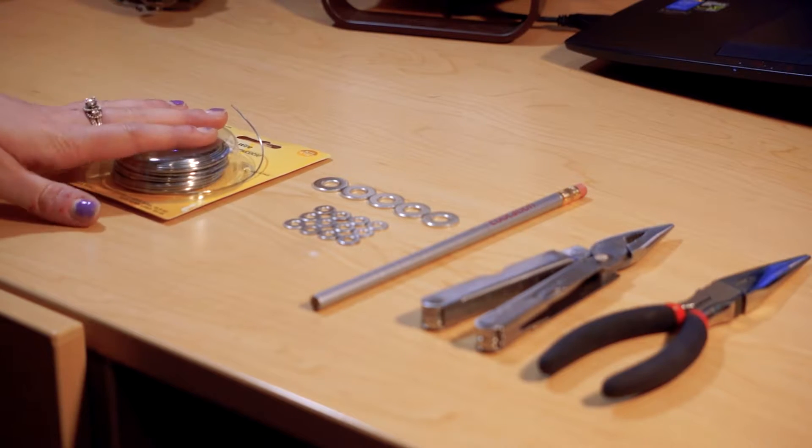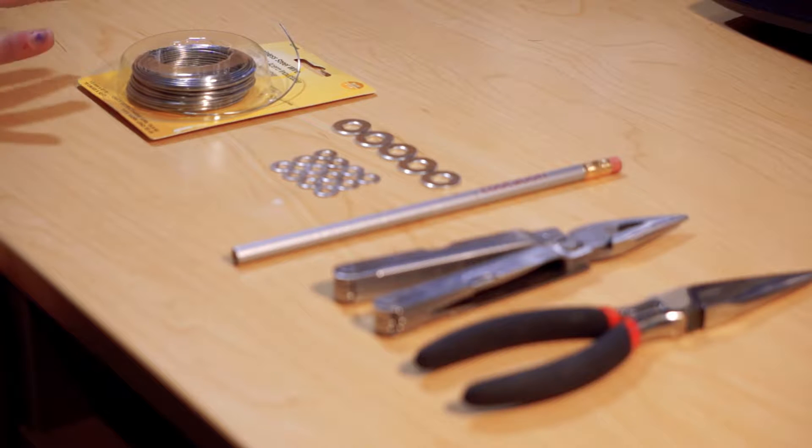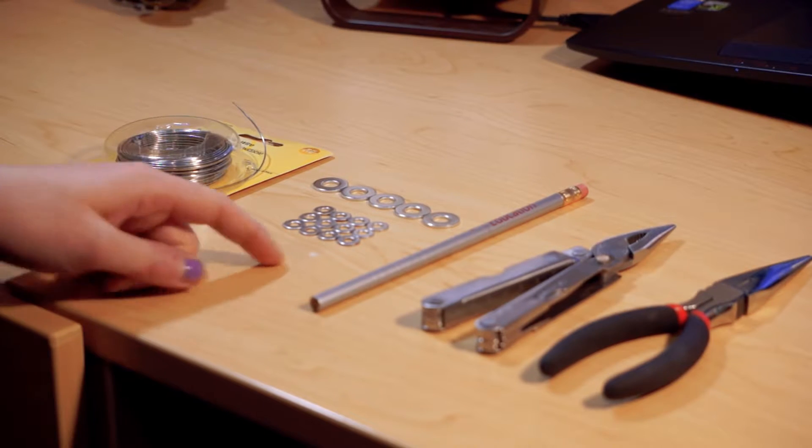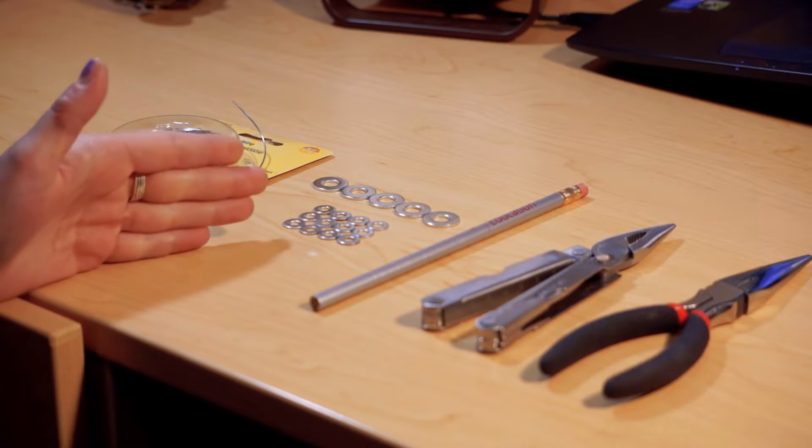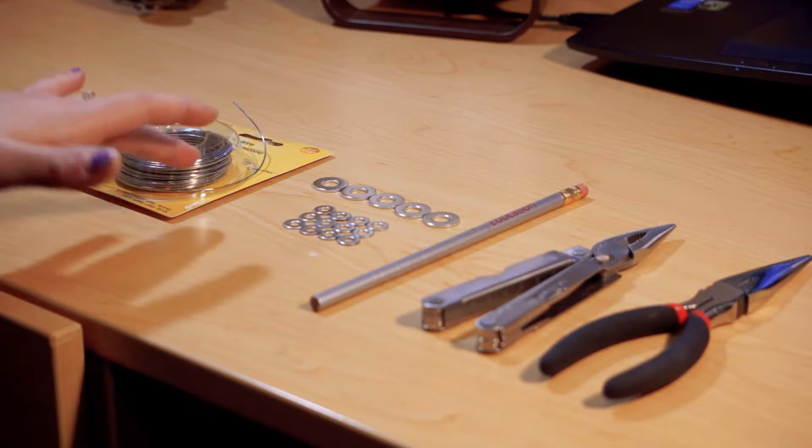First thing you're going to need is some wire. It doesn't really matter what wire you use, but I went with stainless steel wire because it's not super bendable, but it's bendable enough that it will stay locked in. Second thing, you're going to need some washers. You can go with one size, it just depends on your design, but I went with two different sizes to give it more dimension.